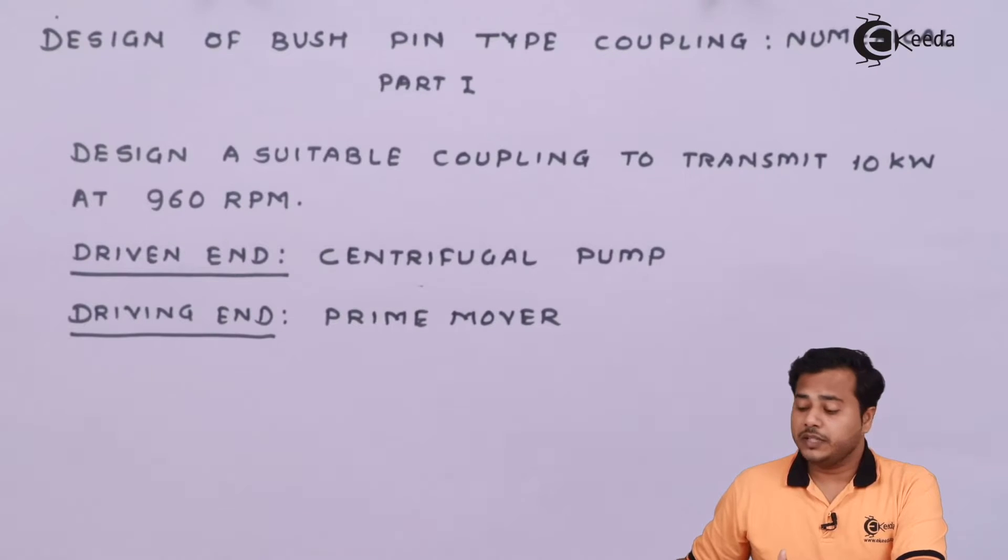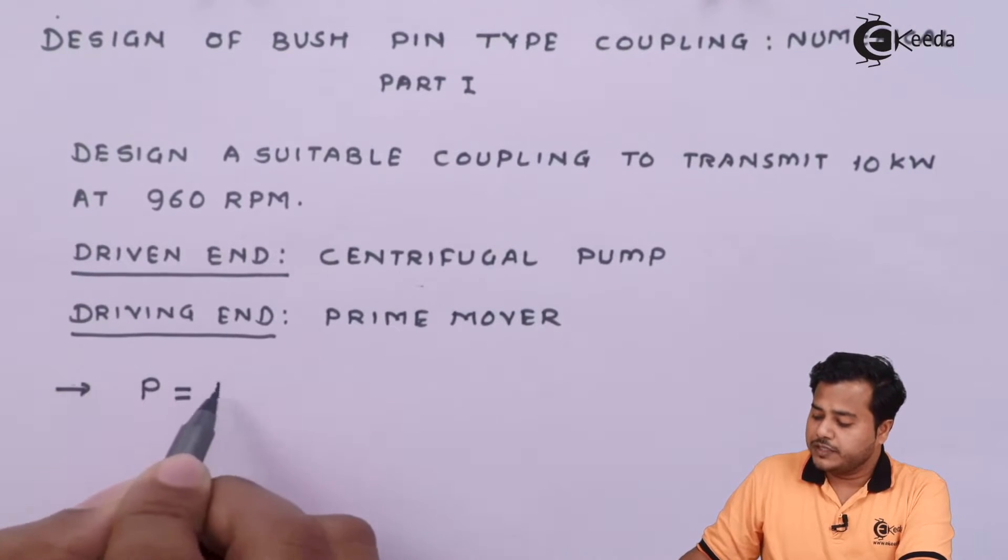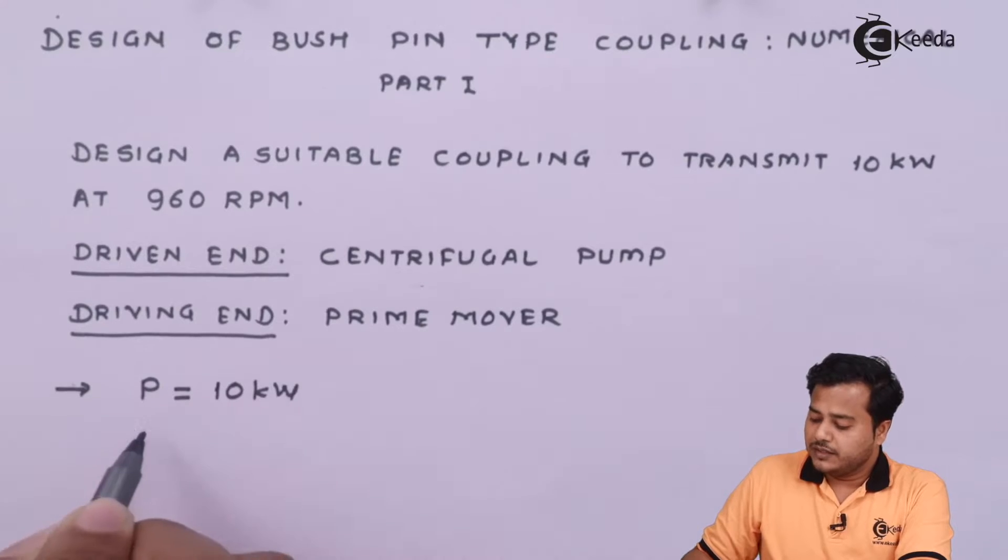Now if you see this properly, they have nowhere mentioned that select a bush pin type of coupling or the flexible coupling. So you have to go through the details and then you have to analyze it properly further. So let us quickly write down what we have. The power has been given is 10 kilowatt. The RPM value given is 960.